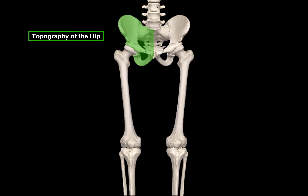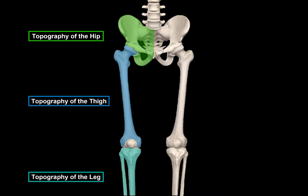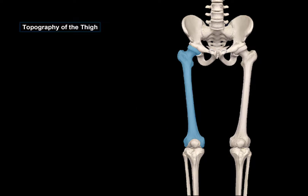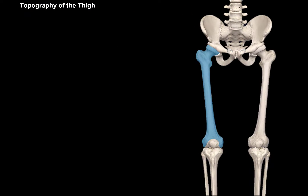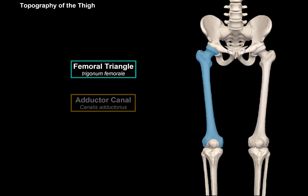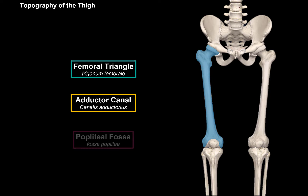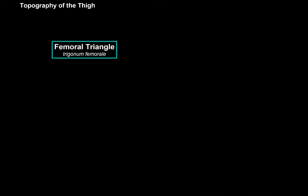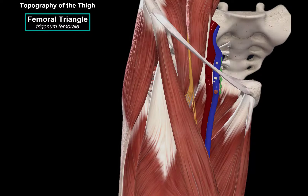In the last video, we covered the main topographical openings of the hip. Now let's do the topography of the thigh and the topography of the leg. The topography of the thigh consists of the femoral triangle, adductor canal, and the popliteal fossa. So let's start with the femoral triangle.